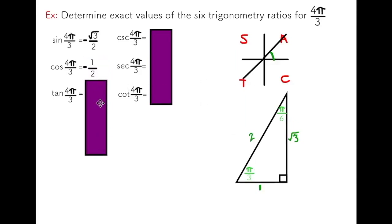And for tan, I'm looking at the opposite over the adjacent, root 3 over 1. In this case, because I'm in the tangent quadrant, that's going to be a positive value.